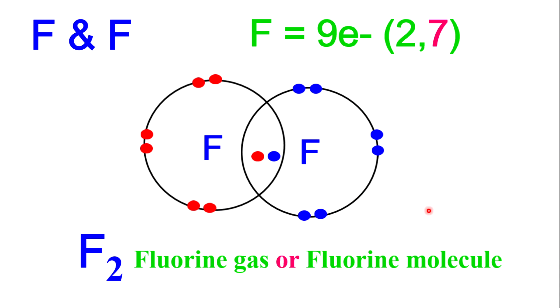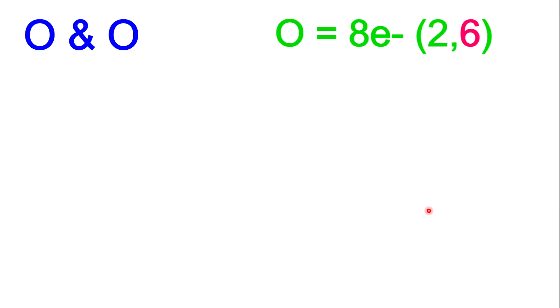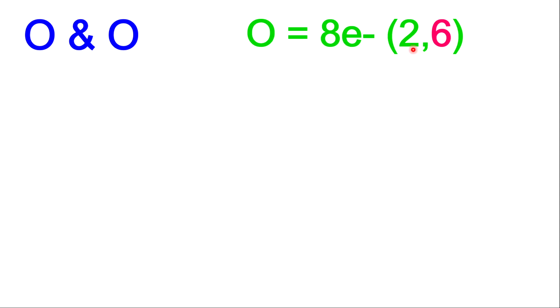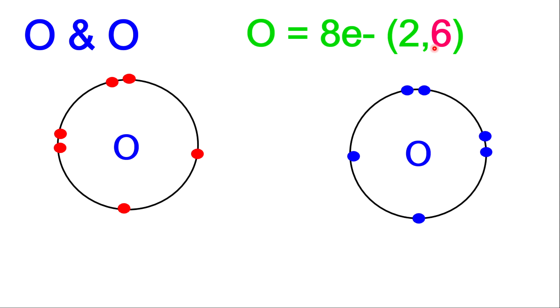Now let's jump into another example. This time we are bonding oxygen and oxygen. First, we establish the valence electrons. Oxygen has 8 electrons, therefore the electron configuration is 2 and 6, making the valence electrons 6. Let's draw our atoms — each atom of oxygen must contain 6 electrons. The next thing is to establish how many electrons are needed by each atom to be completely filled. If each atom has 6, it therefore means each atom will need 2 more electrons to be completely filled.